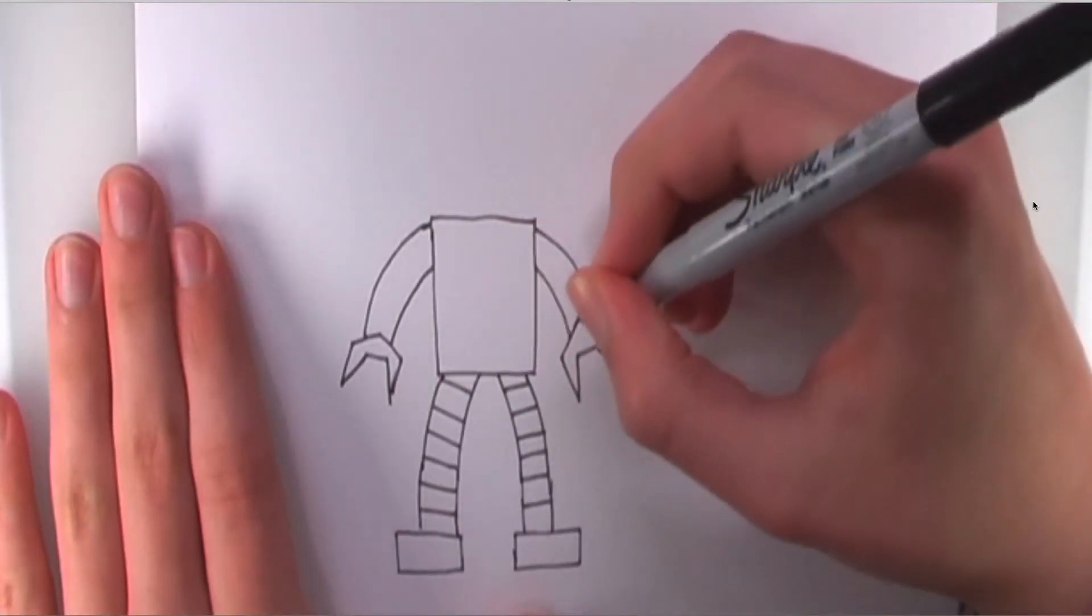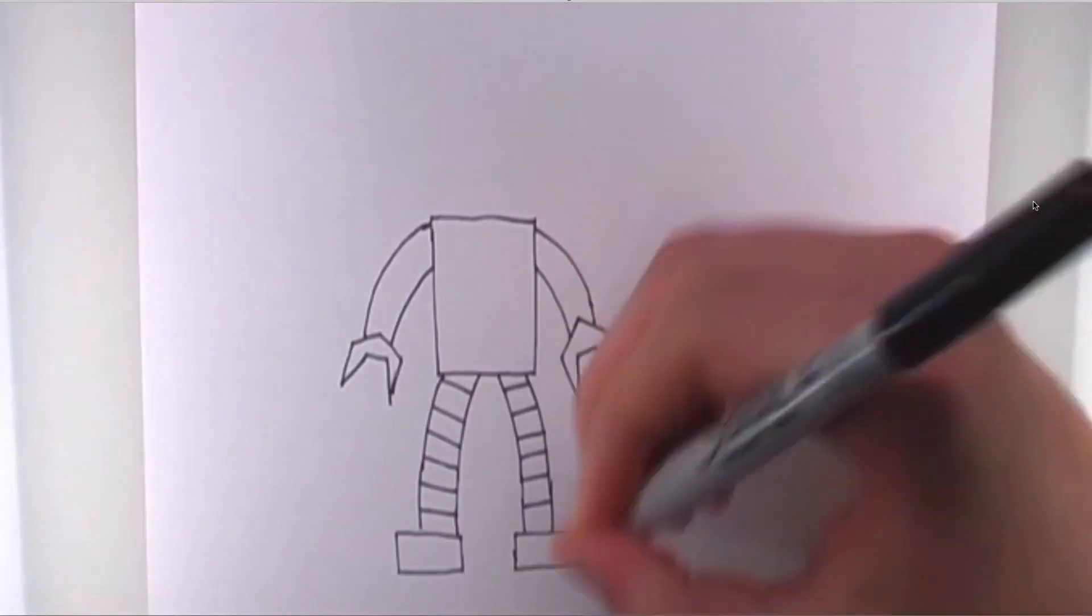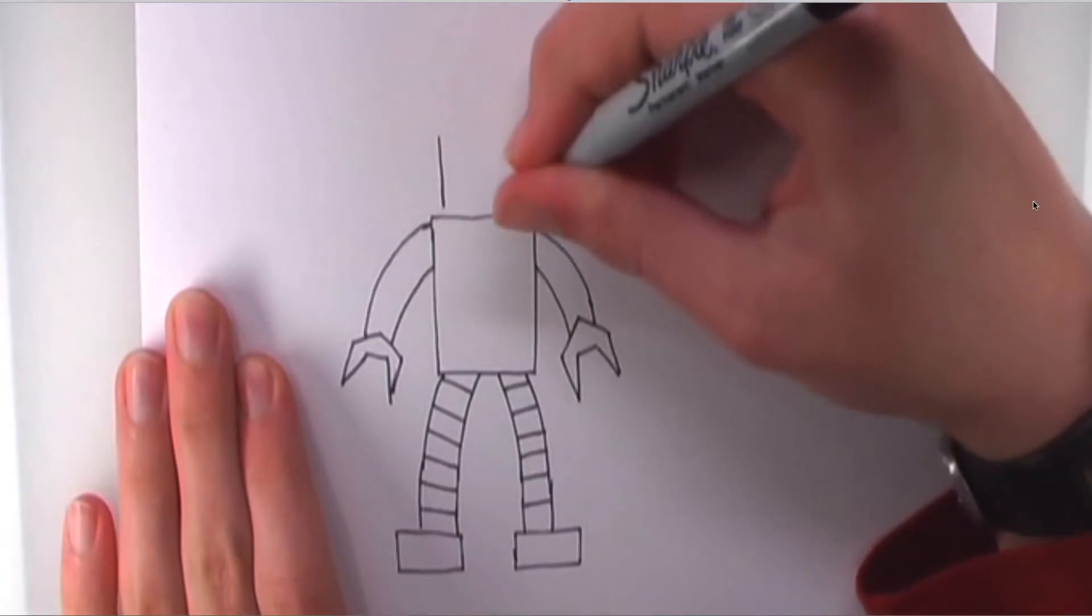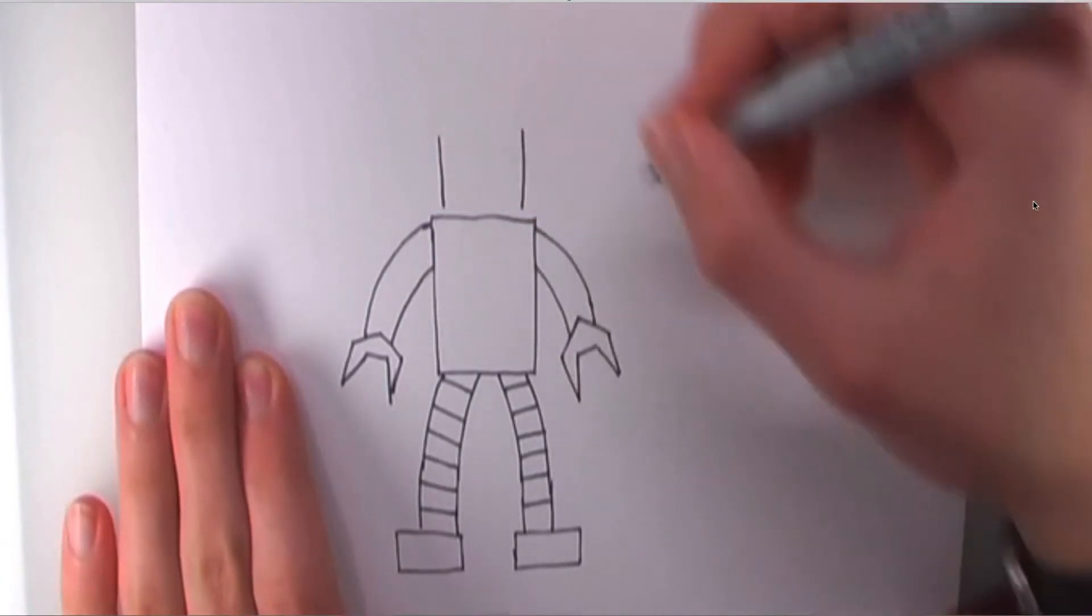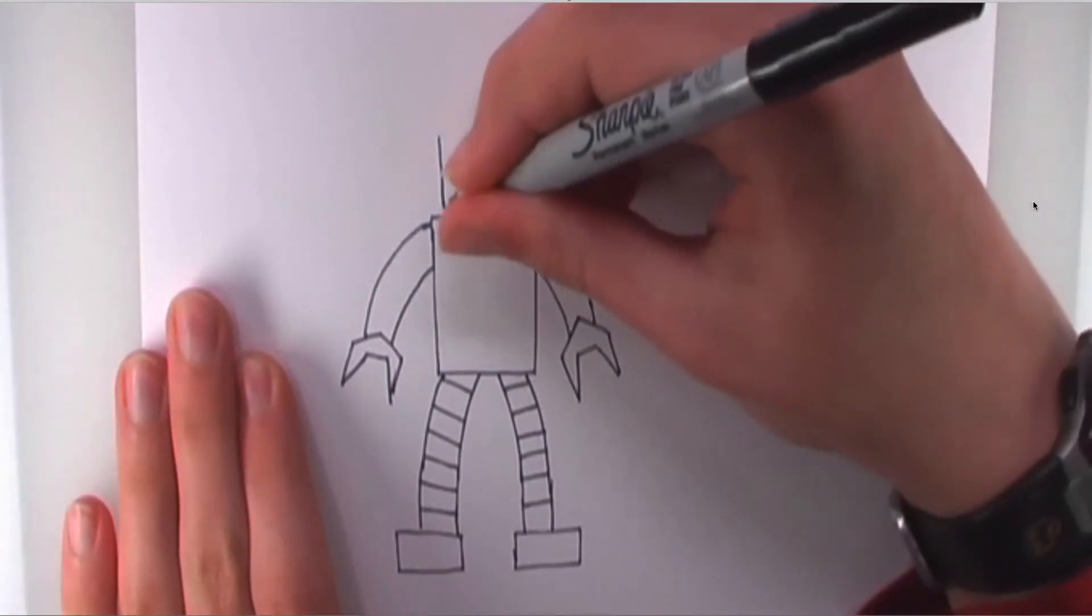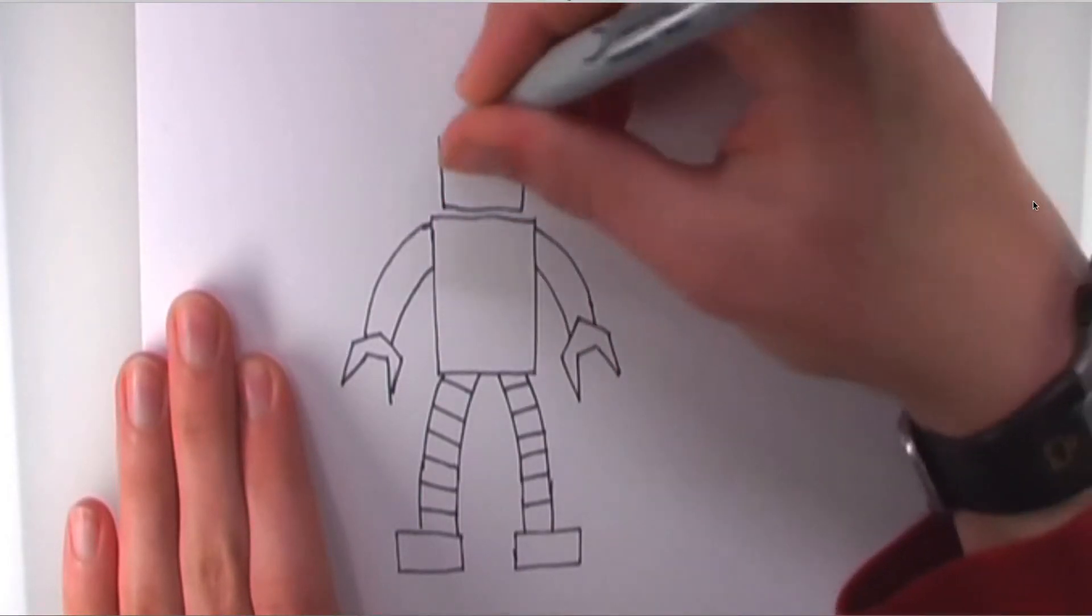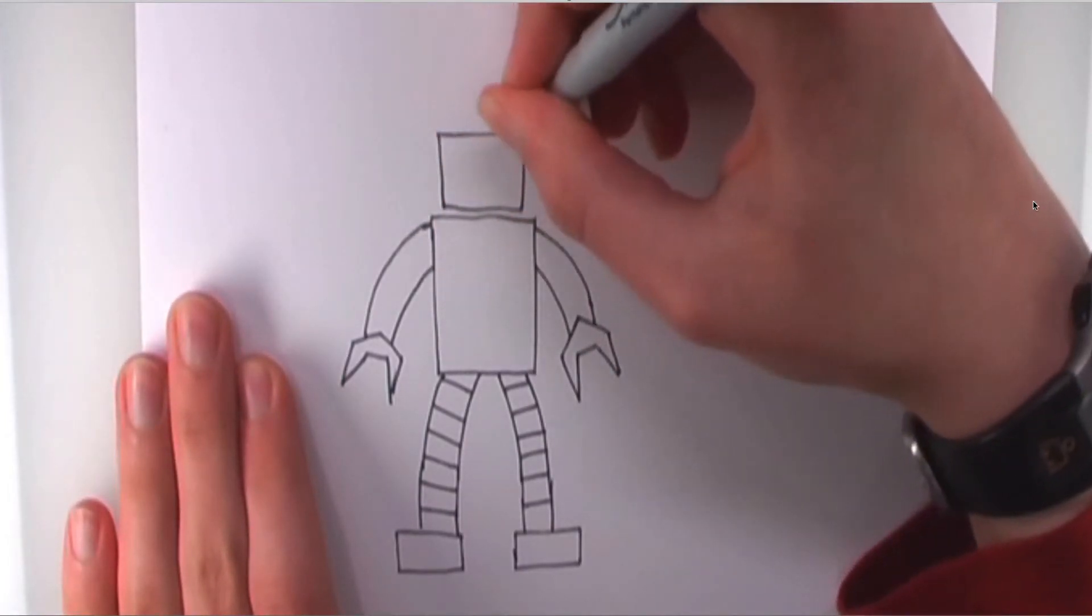So, we're going to do another rectangle like the feet, but up here for our head. And, we're going to put just a little bit of space between the body and the head. So, just a rectangle like that.